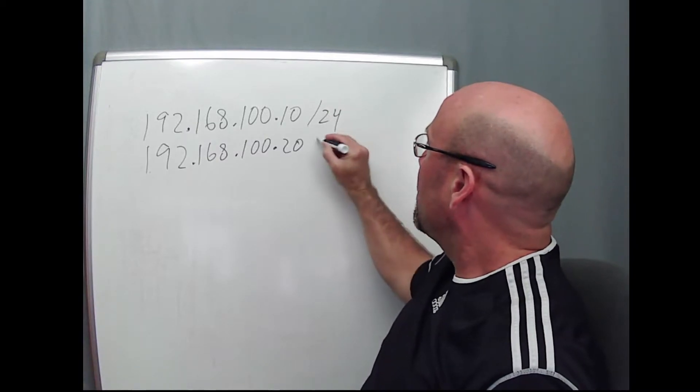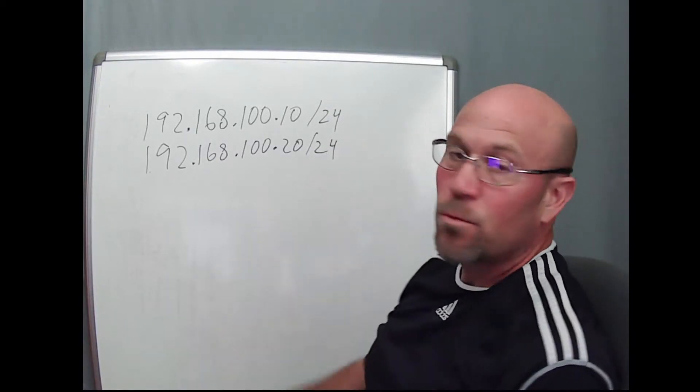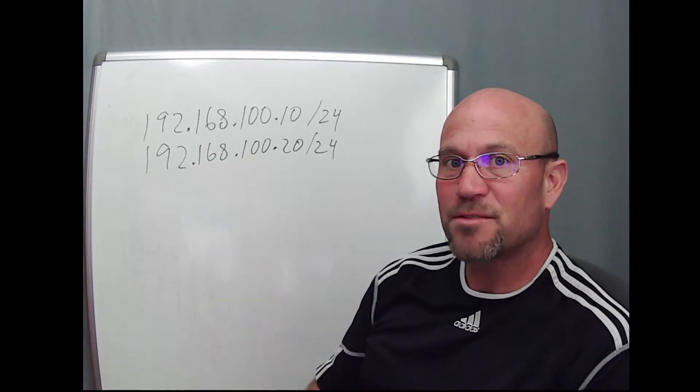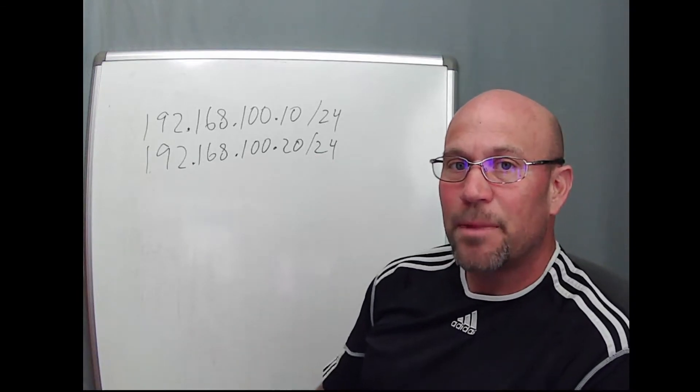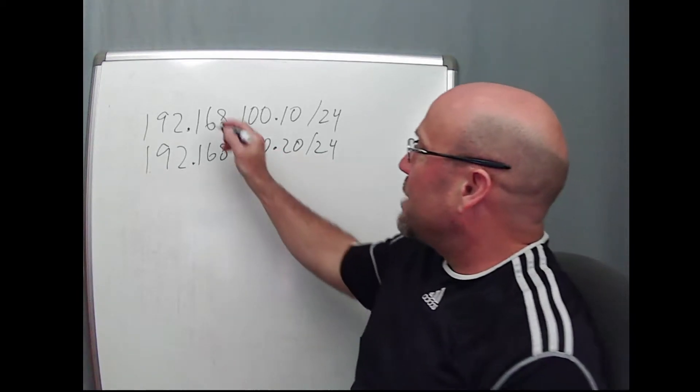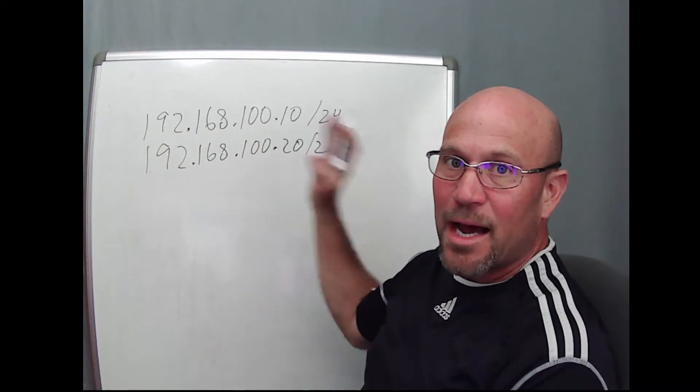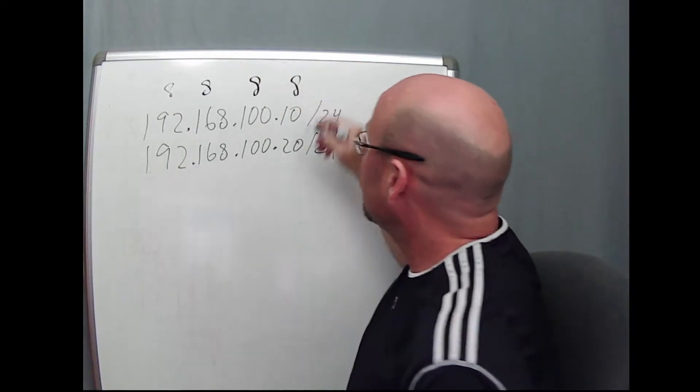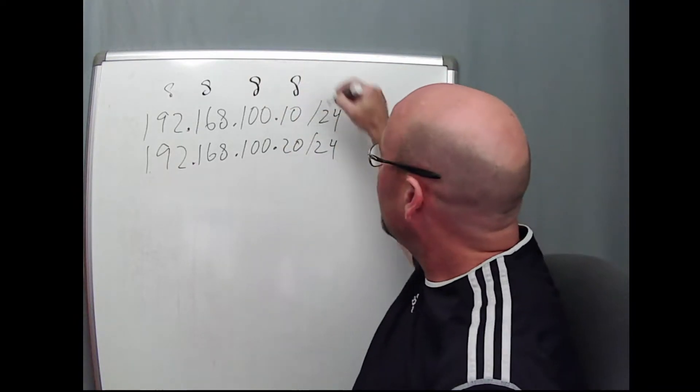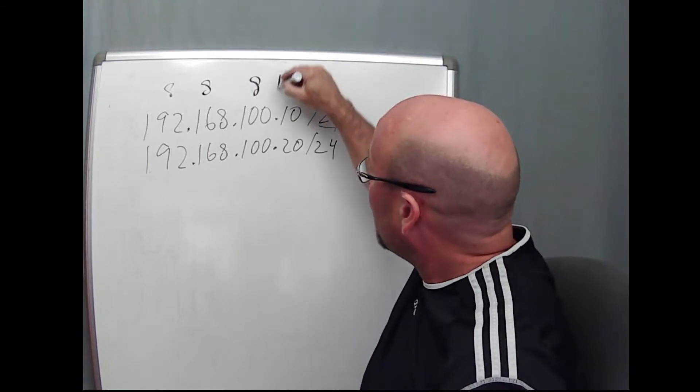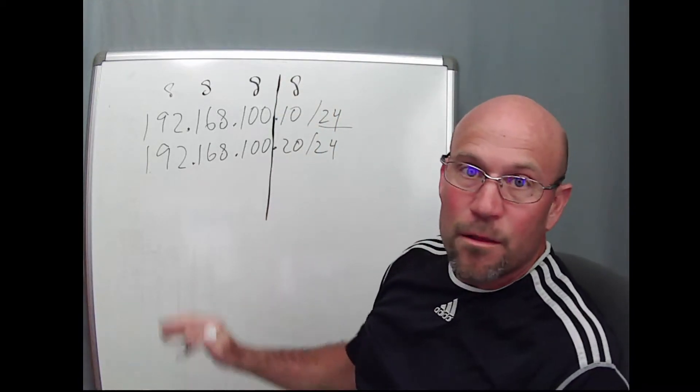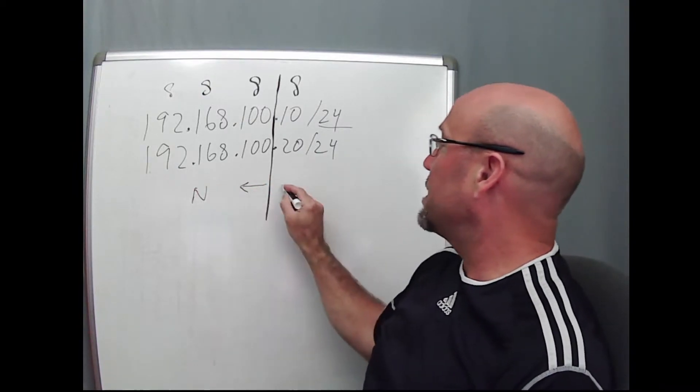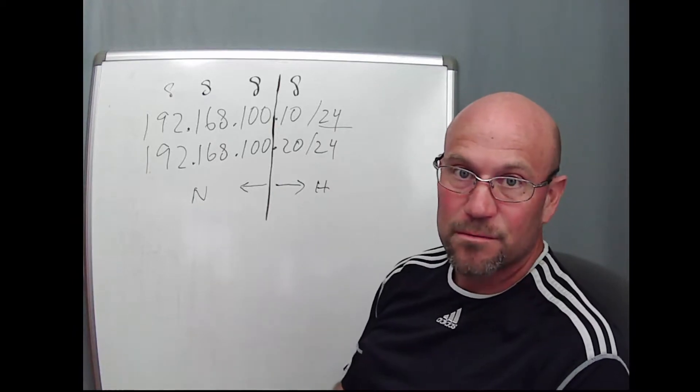So if I told you that these two addresses both have slash 24s and I asked you, are they on the same subnet? You should be able to look at this quickly and know that a 32-bit IPv4 address is 8 bits, 8 bits, 8 bits, and 8 bits. You should be able to know right away that on the 24th bit boundary, which is right there, everything to the left is known as network bits, everything to the right is known as host bits.